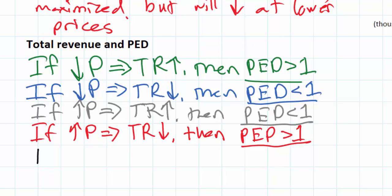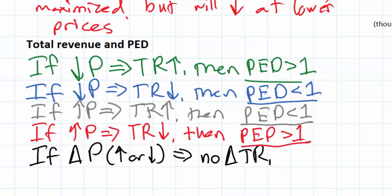There's one more condition we can actually add to this analysis. What if a change in price, so we can just say if a change in price of any direction, up or down, leads to no change in total revenue, what does that tell you about the demand for that good? It tells you that the demand is unit elastic. In other words, the percent change in quantity demanded will be equal to the percent change in price.